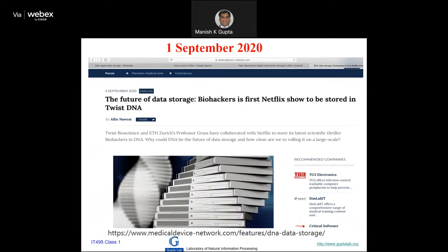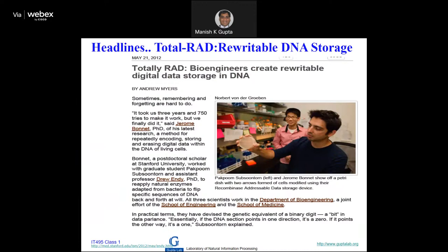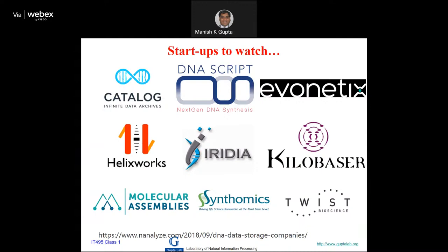There are so many startups — Catalog, DNA Script, Codex DNA, Twist Biosciences — around nine or ten companies working in this area right now. Of course these are startups, but almost all major storage companies — Seagate, Western Digital — are now part of this constellation, and we are making standards for this technology.